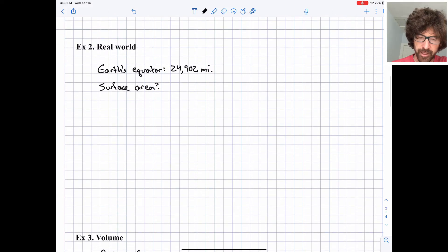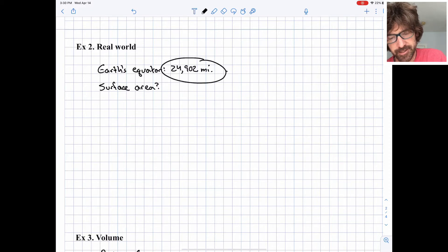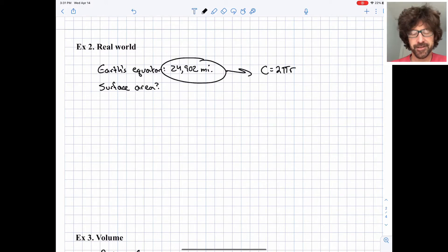A little bit of a real world problem. The Earth's equator is roughly 24,902 miles. So that's the circumference of the Earth at the equator. Let's see if we can figure out the surface area of the Earth. I'll try to keep things exact in terms of pi until the very end, and then we'll use decimal approximations. So we don't know the radius of the Earth yet, so we need to figure that out. The circumference is 2πr. That's just a formula for circumference.